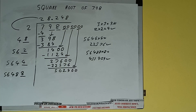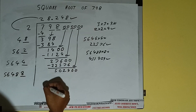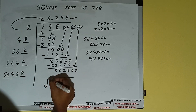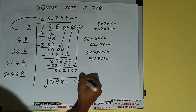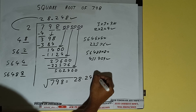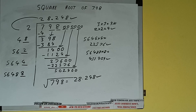We don't need to calculate further because we've got the answer correct up to three decimal places. So the square root of 798 will be 28.248. That will be the answer. If you found the video helpful, please leave a like, do consider subscribing, and thanks for watching.